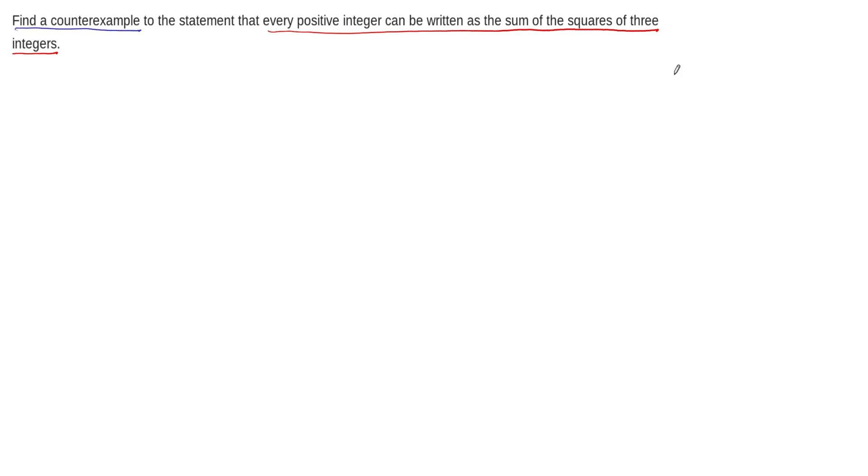So remember that if you want to prove that a statement, especially a universal statement that says every positive integer can be written this way, if you want to prove that a universal statement is false, then you need simply one counterexample, because the negation of a universal is an existential, right?